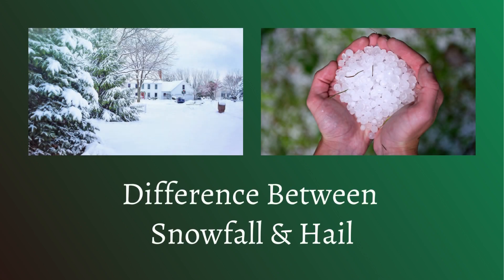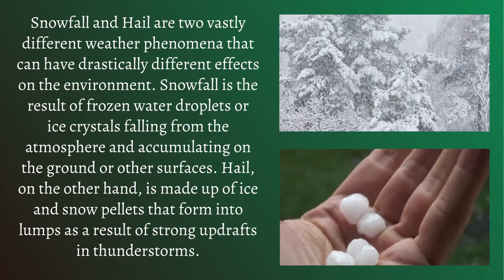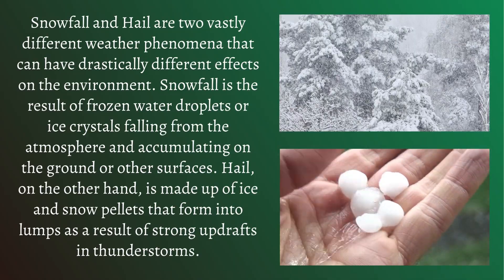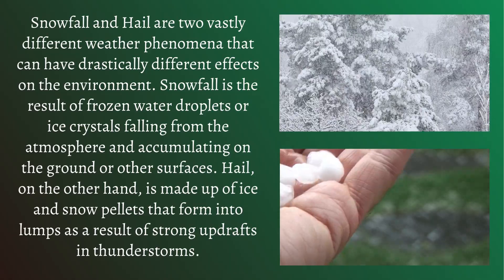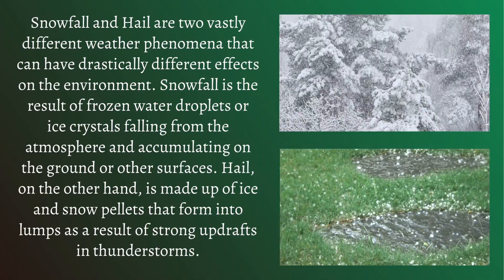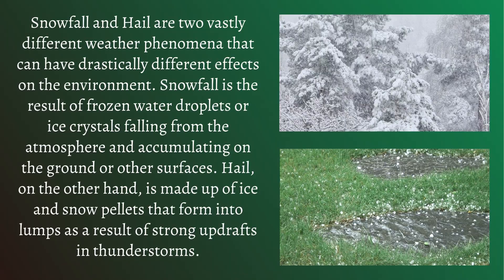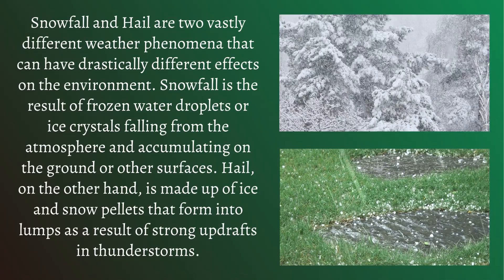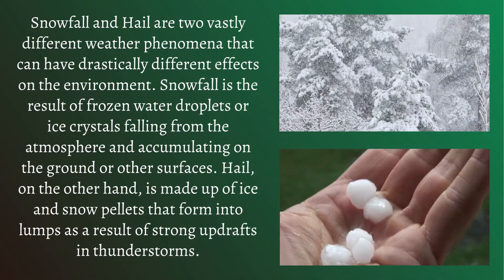Difference between snowfall and hail. Snowfall and hail are two vastly different weather phenomena that can have drastically different effects on the environment. Snowfall is the result of frozen water droplets or ice crystals falling from the atmosphere and accumulating on the ground or other surfaces.